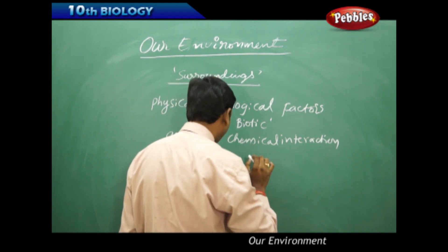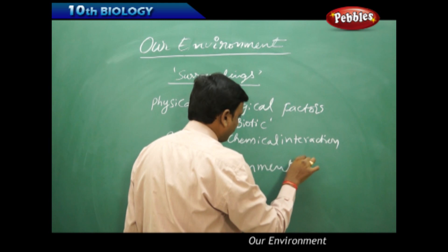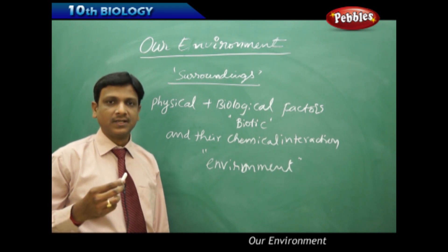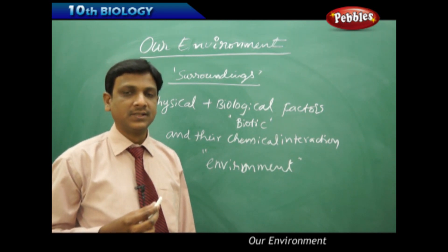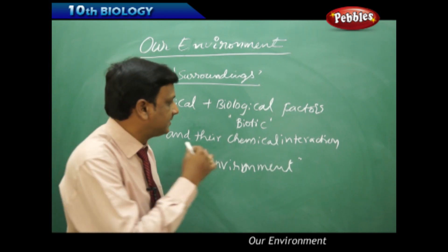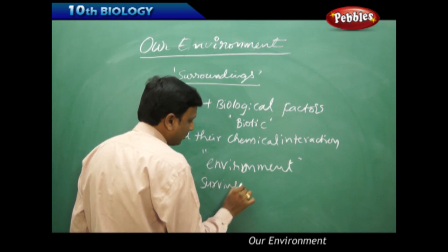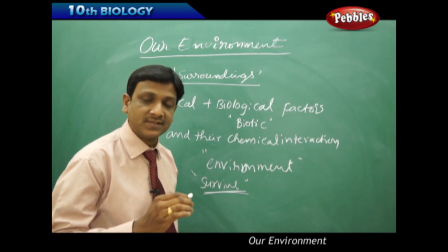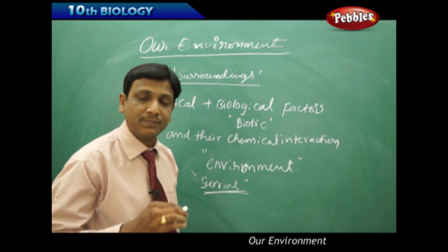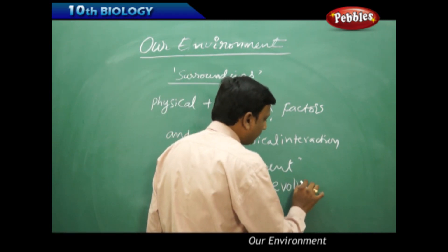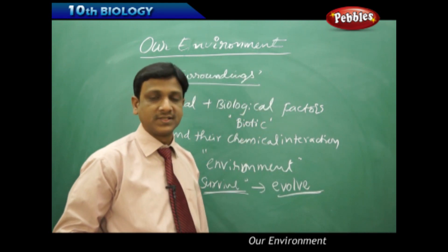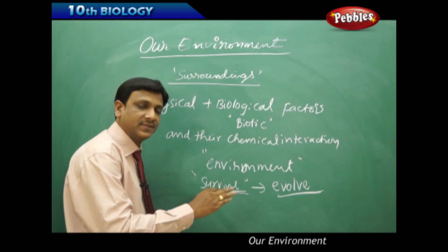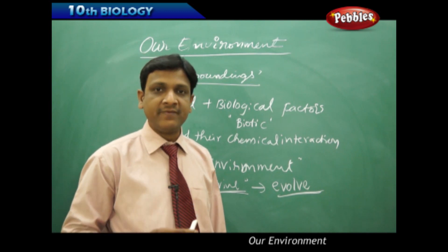All together — the sum of physical and biological factors and their chemical interactions — we call it the environment. These interactions between the abiotic and biotic components not only help organisms to survive, they also enable organisms to evolve. Evolution is a very important process observed in the living world, so these interactions help both for survival and for evolution.